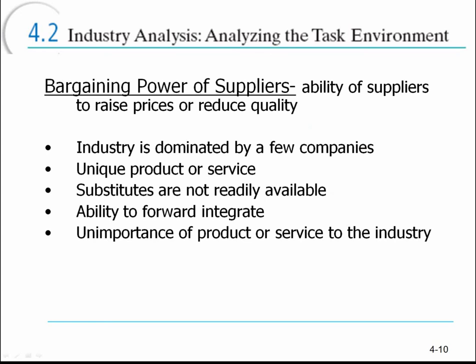Bargaining power of suppliers is similar to bargaining power of buyers — you want to have a variety of suppliers to choose from. If one or two suppliers represented all the material coming in to make your product, that could be a major problem. What if they raised their prices or decided to no longer sell to you? It's always good to do business with more than one supplier so you have diversity, keep suppliers competing with each other, and prevent them from having the power to raise prices without recourse.